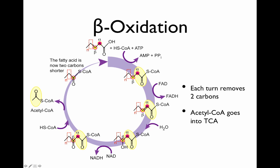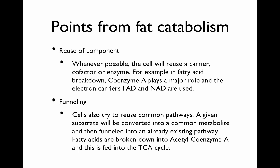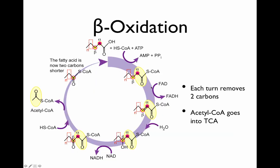So if this began as a 16-carbon fatty acid, it's now 14. By going through 7 more turns of the cycle, you can convert all of it into acetyl-CoA. Some key points from fat catabolism: first, there's the reuse of components — the cell reuses carrier cofactors and enzymes. In beta-oxidation, coenzyme A plays a major role, and the electron carriers FAD and NAD are used. Second is a concept called funneling: the cell always tries to reuse pathways it already has. A substrate is converted into a common metabolite and funneled into an already existing pathway — for example, fatty acids are broken down into acetyl-CoA, which is then fed into the TCA cycle. You also get a lot of electrons as FADH2 and NADH for every fat, because fats have a lot of energy in them.